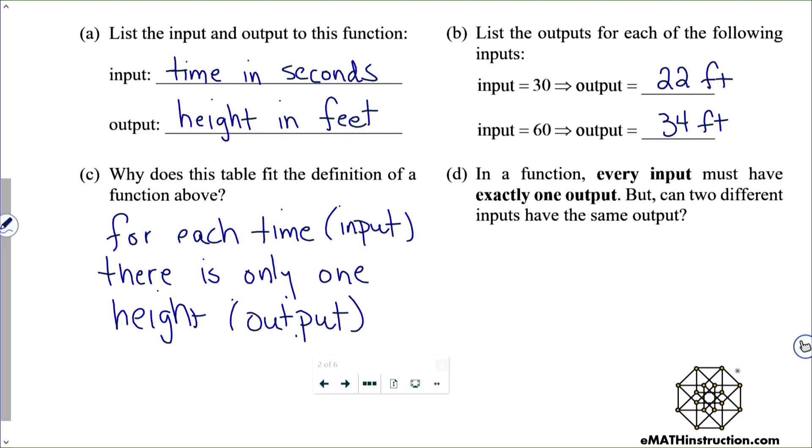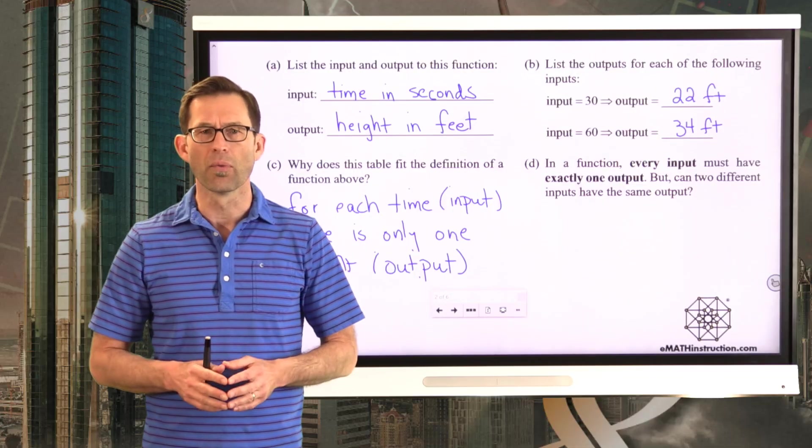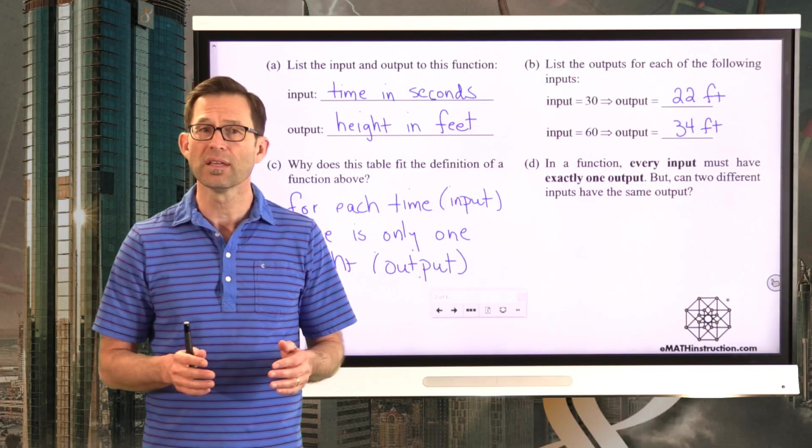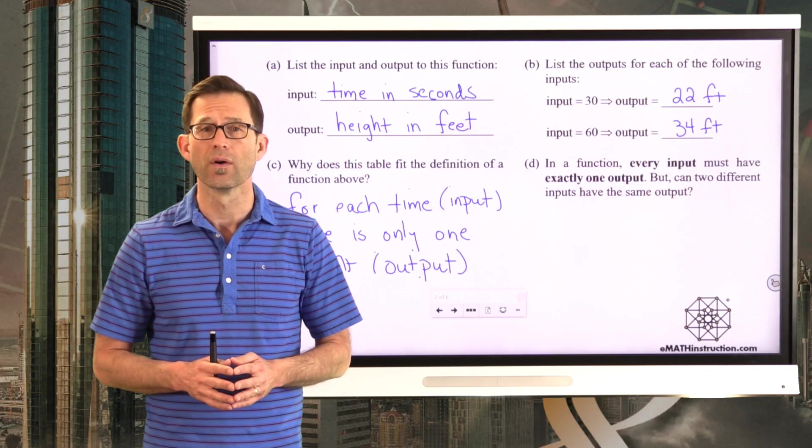But let's take a look at letter D. This is very important. In a function, every input must have exactly one output. But can two different inputs have the same output? Well, take a look at the table and see if that can happen, at least in this case. Pause the video for a moment.